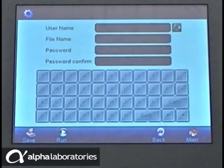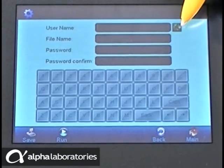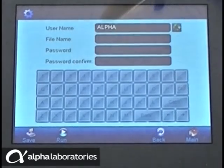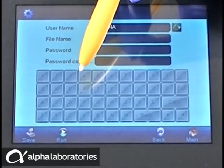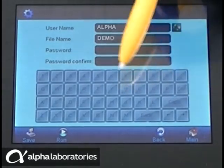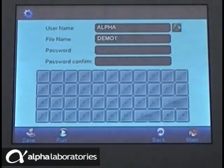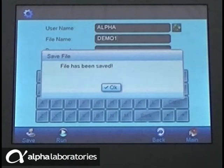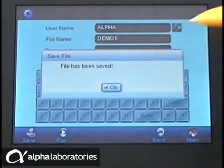Once you are happy with your method setup, touch Save Run. Enter a new user name or select an existing one. Create a recognizable file name. You can also opt to password protect your file to prevent modification by other users. Touch Save. Up to 250 programs can be saved directly on the machine and an unlimited number externally on a network or PC.